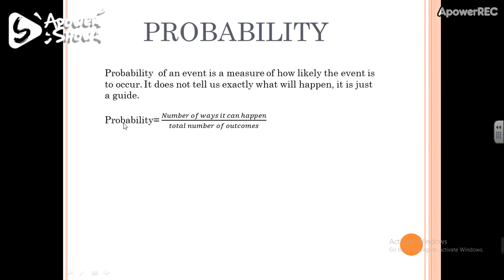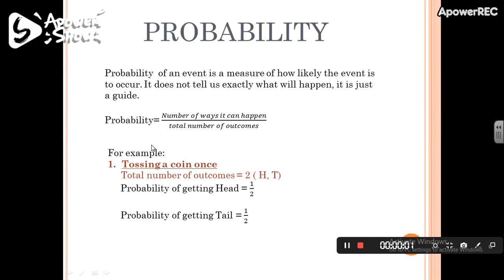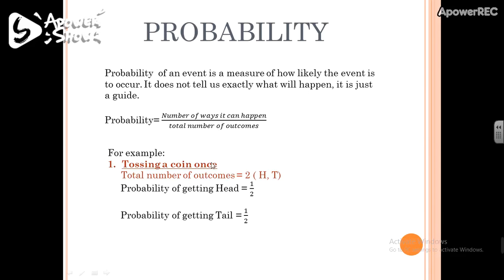The formula for probability is: the number of ways the event can happen, divided by the total number of outcomes. Let's understand this concept through examples.